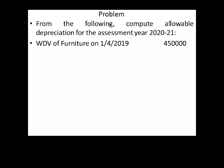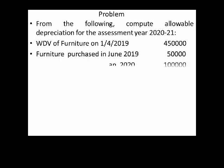Written down value of furniture on 1-4-2019 — that is the beginning of the previous year. Purchases in June 2019 was 50,000. And the purchase made in January 2020 was 1 lakh.